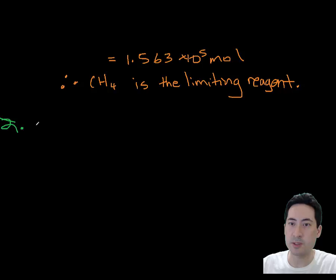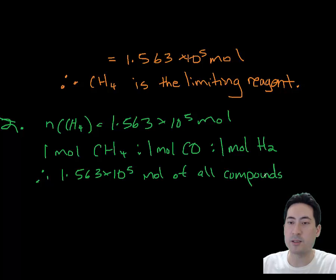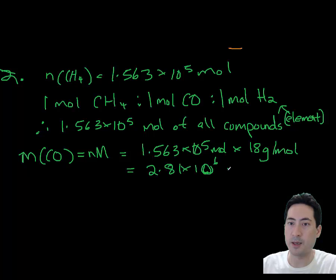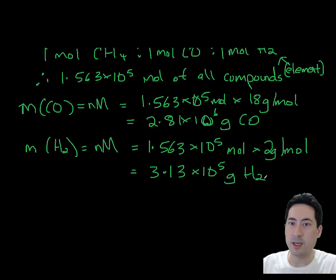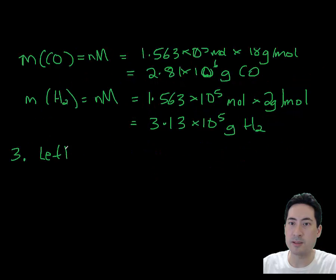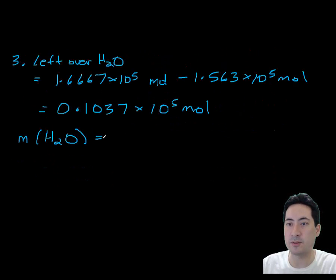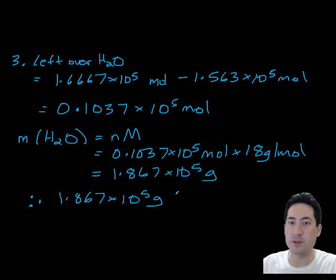That's the only one we will use because there'll be excess water. Because of the ratio of the equations, everything has that amount of moles coming from it. Carbon dioxide will get 2.8 by 10⁶ grams, we'll get 3.13 by 10⁵ grams of hydrogen. We have initially 1.66 and we only need 1.5, so that leaves us 1.037 left over. The mass of that gives us 1.8 by 10⁵ grams of water left over.